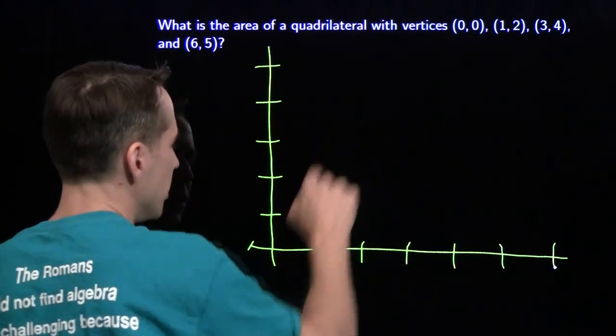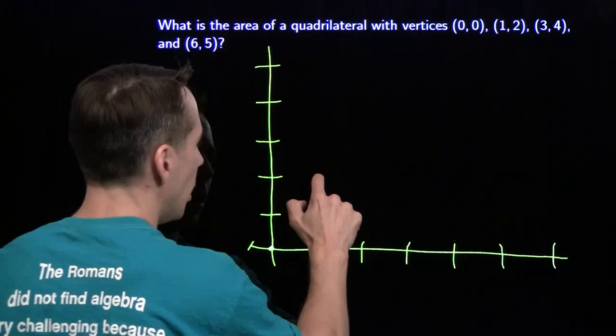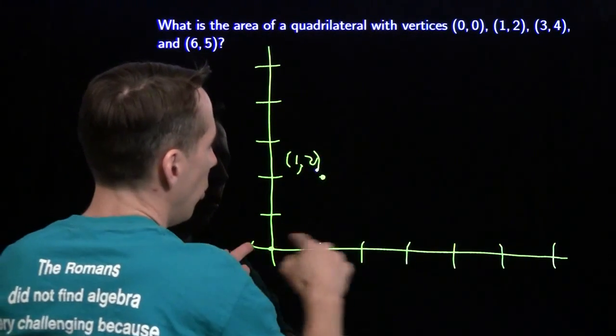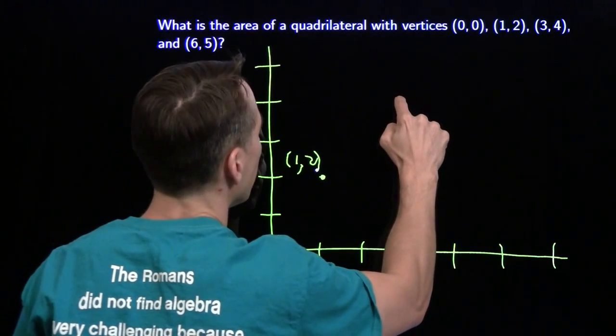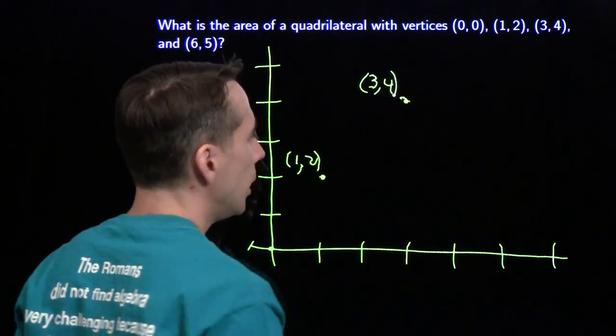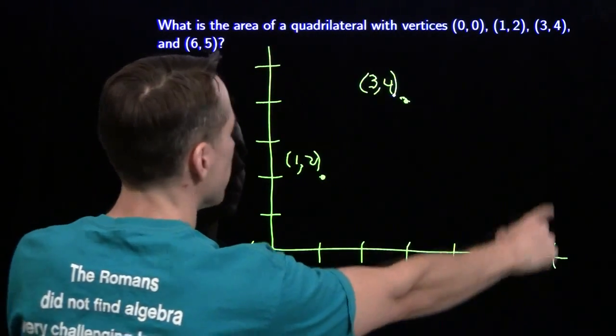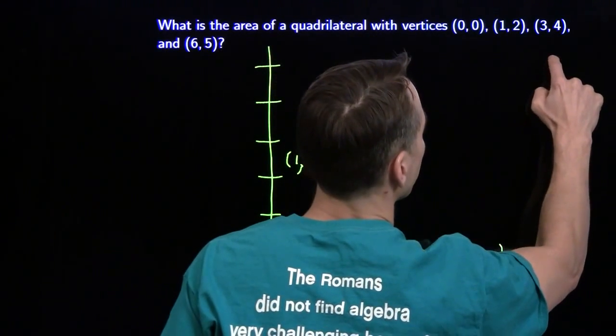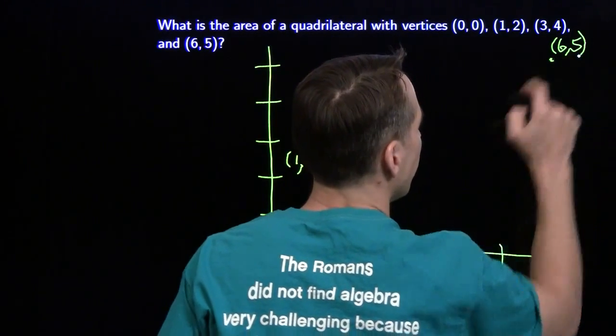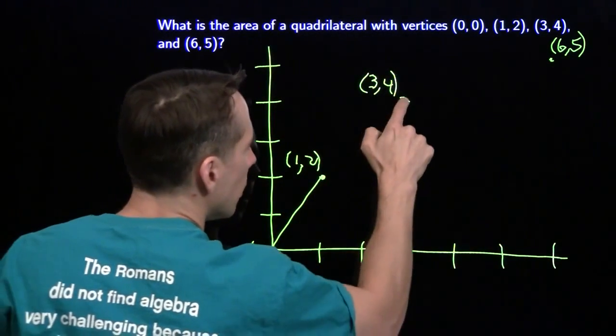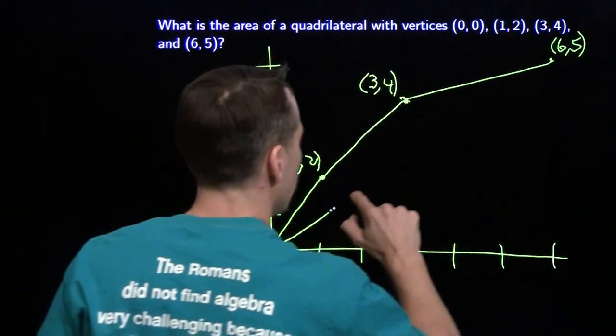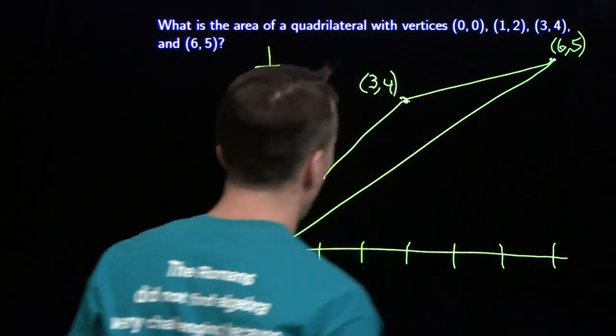All right, we go up as high as 5, we go out as far as 6. Draw the picture. Find the vertices: (0,0), over 1, up 2 - there's (1,2), over 3, up 4 - (3,4), and then the last one, over 6, up 5 - (6,5). And then we play a little connect the dots. And we get a really funky looking quadrilateral.